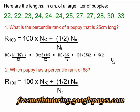With percentile, we will always round a percentile rank up. So 54.2 rounds all the way up to the 55th percentile. The puppy that is 25 centimeters long has a percentile rank of 55.